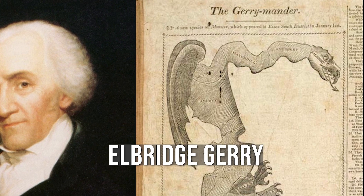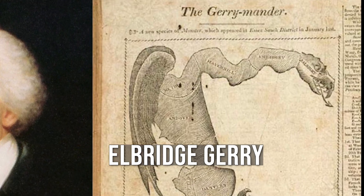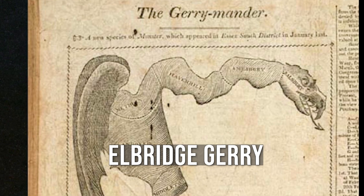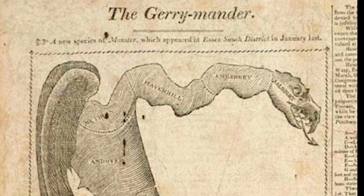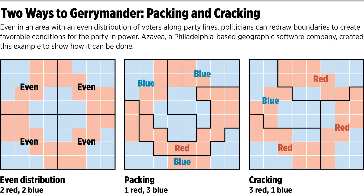Gerrymandering is the practice of manipulating the boundaries of electoral districts to give one political party or group an unfair advantage over another. The practice is named after Elbridge Gerry, a Massachusetts governor who drew a highly irregular district map in 1812 that resembled a salamander. Gerrymandering can take many different forms, including cracking — dividing up a group of voters into multiple districts to dilute their voting power — and packing — concentrating a group of voters into one district to reduce their influence in other districts. Gerrymandering can have a significant impact on election outcomes and can be used to perpetuate one party's hold on power or to diminish the voting power of certain groups, such as racial or ethnic minorities.